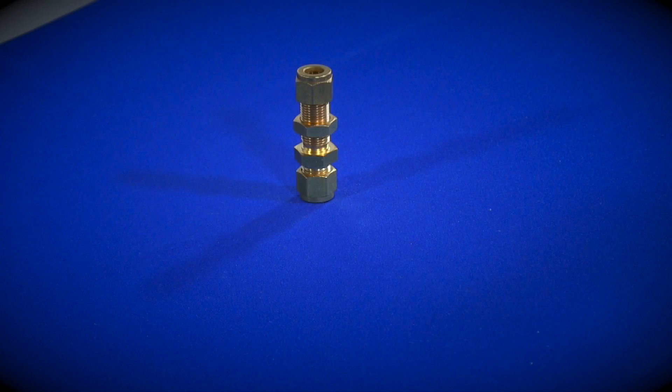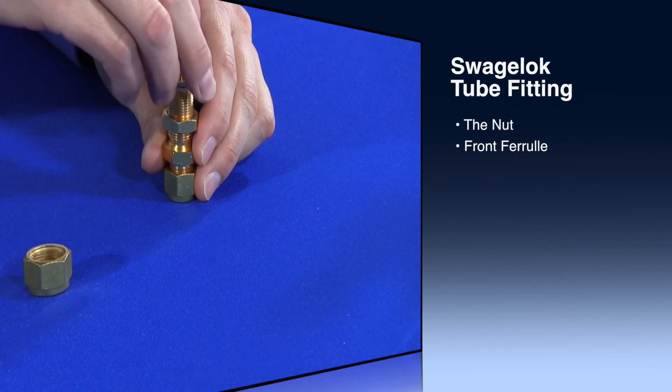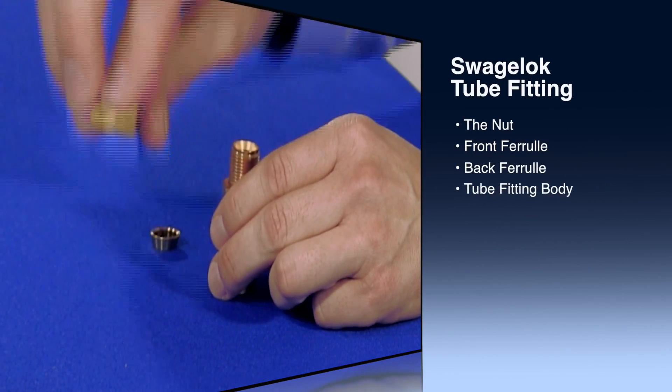How many components make up a Swagelok tube fitting? The obvious answer is four. First there's the nut, the front ferrule, and the back ferrule, and finally the Swagelok tube fitting body.